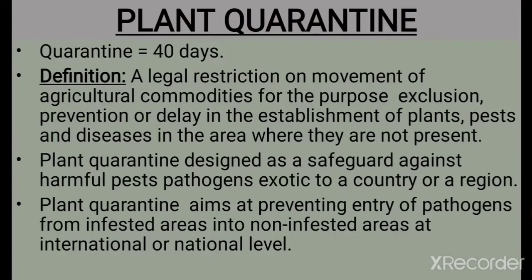First of all we will talk about plant quarantine. 'Quarantine' means 40 days. The definition of plant quarantine is: a legal restriction on movement of agricultural commodities for the purpose of exclusion, prevention, or delay in the establishment of plant pests and diseases in areas where they are not present. In plant quarantine, we operate in areas where there was no plant disease present, to prevent spread into those areas.